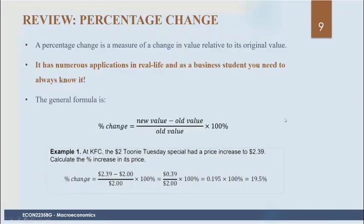For example, at KFC, if the $2.00 Tuesday special had a price increase to $2.39, the percentage change would be: new value is $2.39, the difference is $0.39, denominator is $2.00. That results in a price increase of 19.5%. The percentage change is the difference in value as a proportion of what it was before.